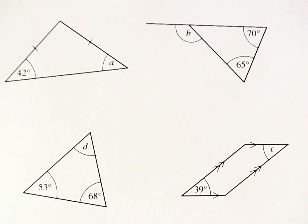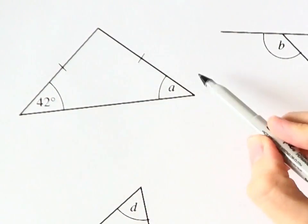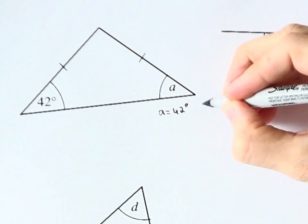So let's try using these new rules to solve some geometric problems. Angle A must be 42 degrees, because it's the other base angle in this isosceles triangle.